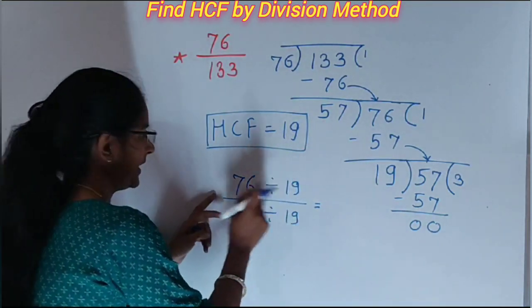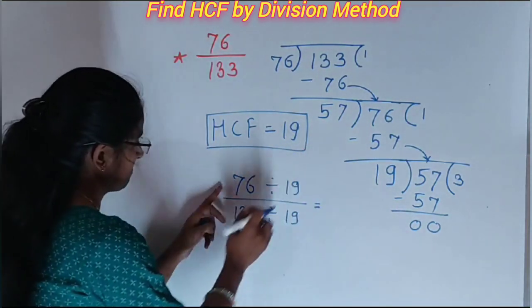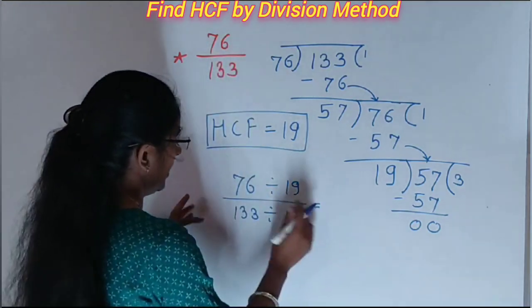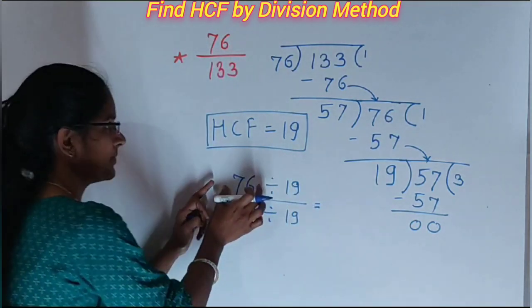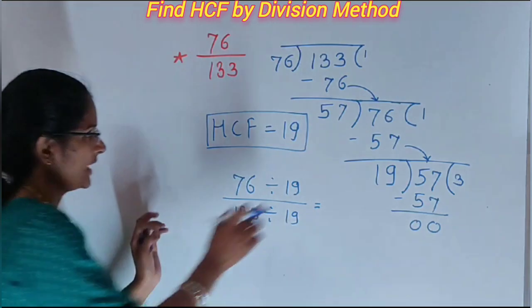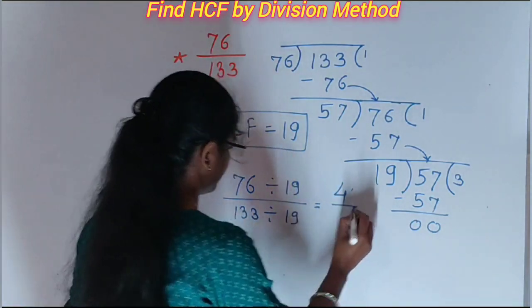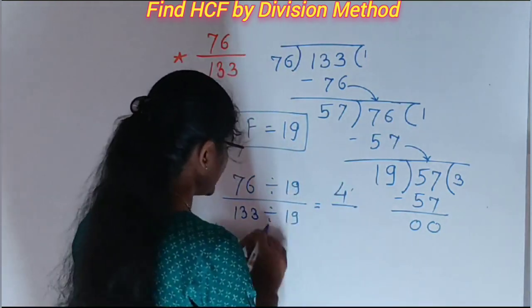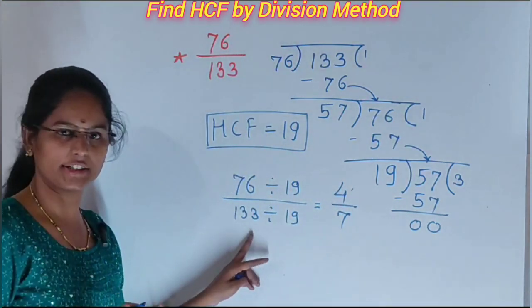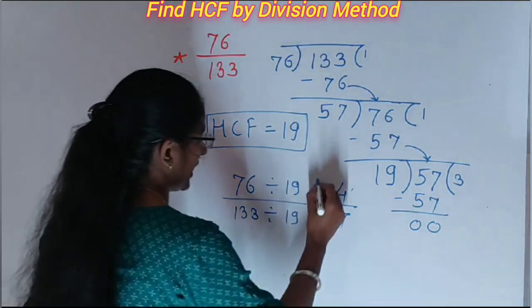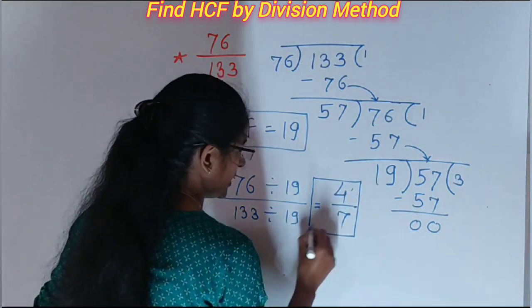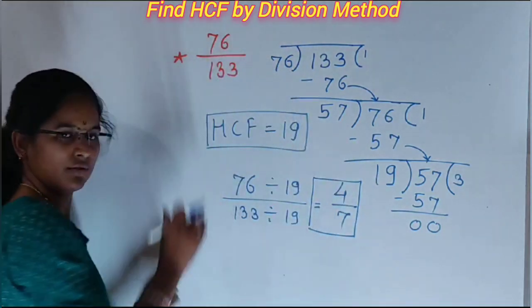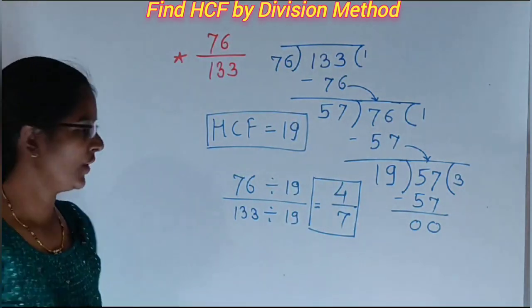Then 19 divided by 76. 19 fours are 76. And then here 19 sevens are 133. In this way we can find the simplest form of this question and find the HCF.